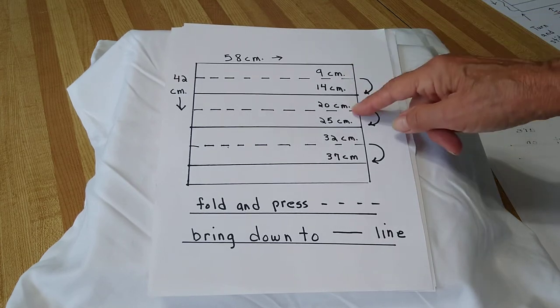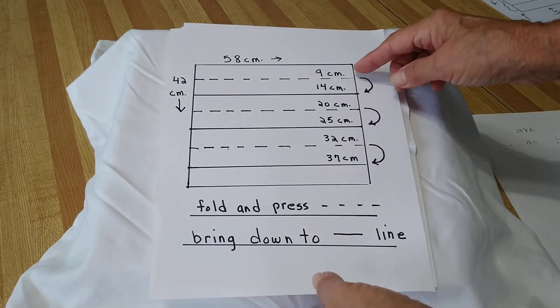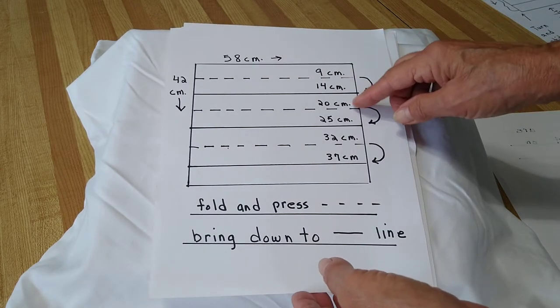Take these folds, the lines that are broken up, and you're going to fold it on that and press it. Then we're going to bring it down to the solid line.